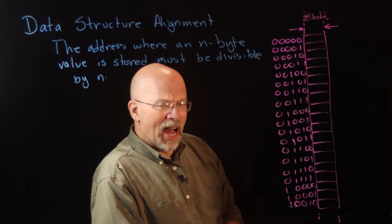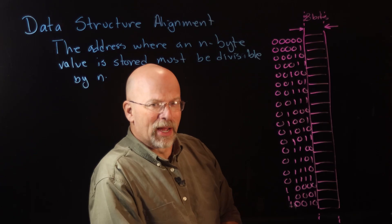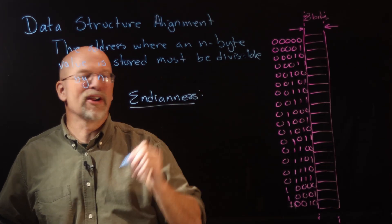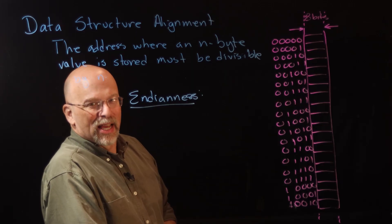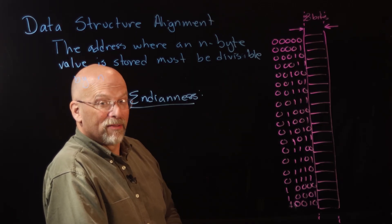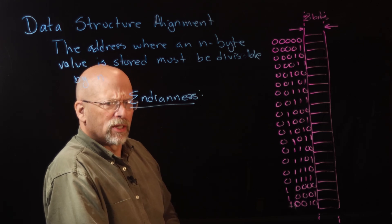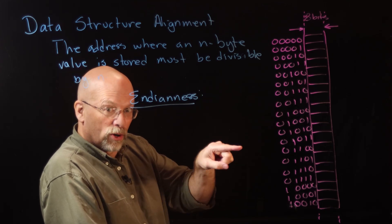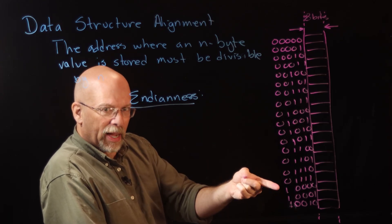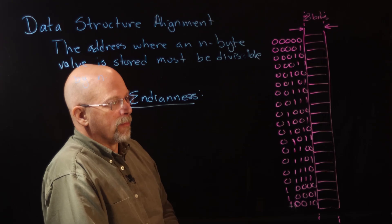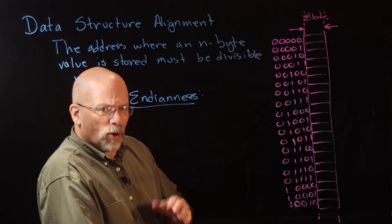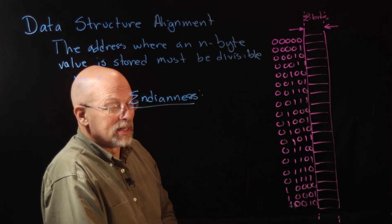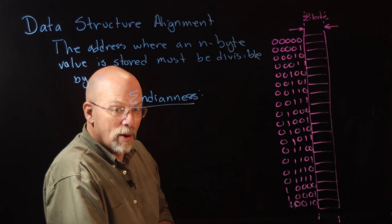As a consequence of cache block alignment, we also need to address something called endianness. Endianness concerns the fact that a 32-bit value must be stored across four memory locations. The question is: which byte goes first? Do you start with the most significant byte, storing in order, or do you store in reverse order starting from the least significant byte? It turns out there really are two different ways — some processors store the least significant byte first, and some store the most significant byte first.